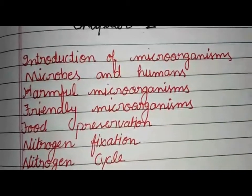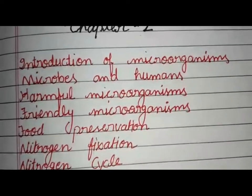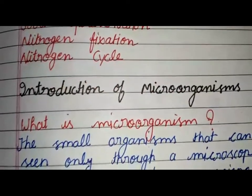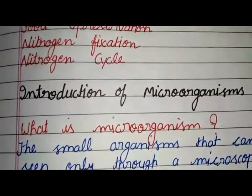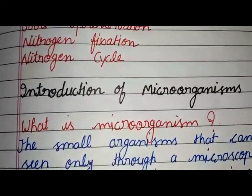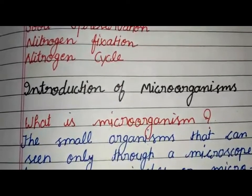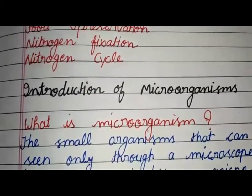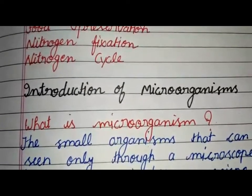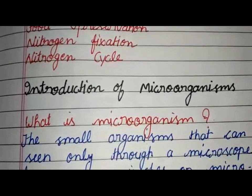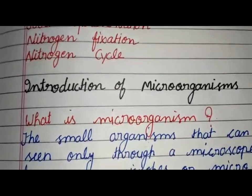So firstly, we will discuss about the Introduction of Microorganisms. We know that there are many different kinds of organisms in the living world. These organisms differ in their size, shape, and color. Some of these can be seen with the naked eye, but some organisms can only be seen through a microscope.